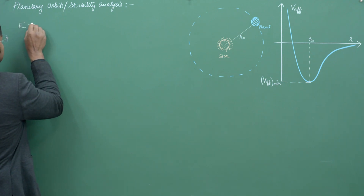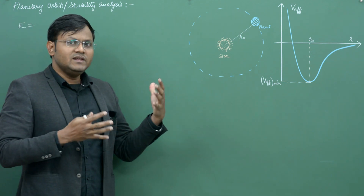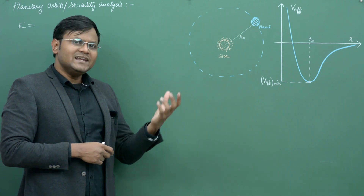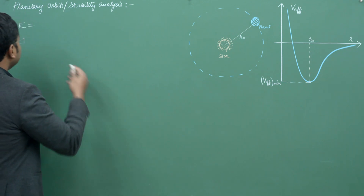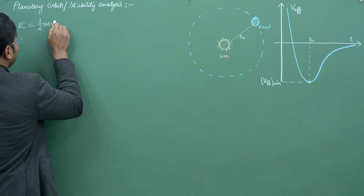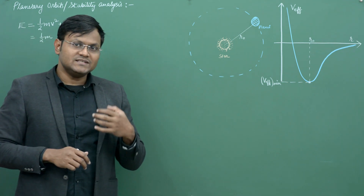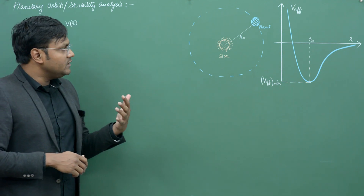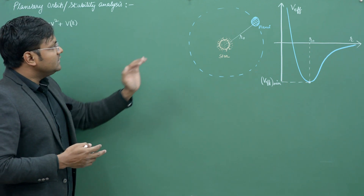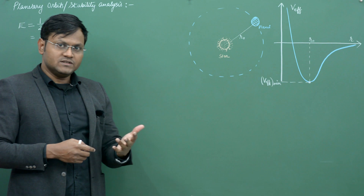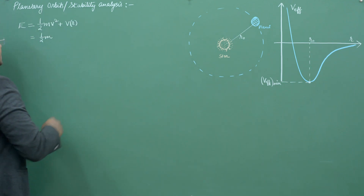For that, let us first write down the expression for the total energy of this kind of system. We consider an ideal system where the mass of the star is very large and the mass of the planet is very small. The total energy is the sum of kinetic energy and potential energy, where the potential energy is some function of r. Because gravitational force is a central force, the angular momentum of the system remains constant, which means planetary motion happens in a plane.